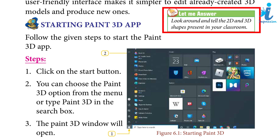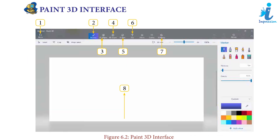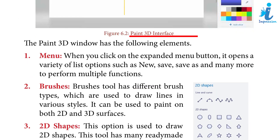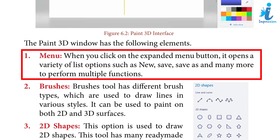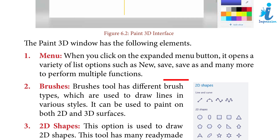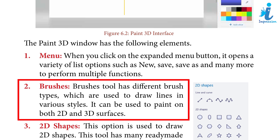Let me answer: look around and tell the 2D and 3D shapes present in your classroom. Paint 3D interface — the Paint 3D window has the following elements. One: Menu — when you click on the expanded menu button, it opens a variety of list options such as New, Save, Save As, and many more to perform multiple functions. Two: Brushes — the Brushes tool has different brush types which are used to draw lines in various styles; it can be used to paint both 2D and 3D surfaces.